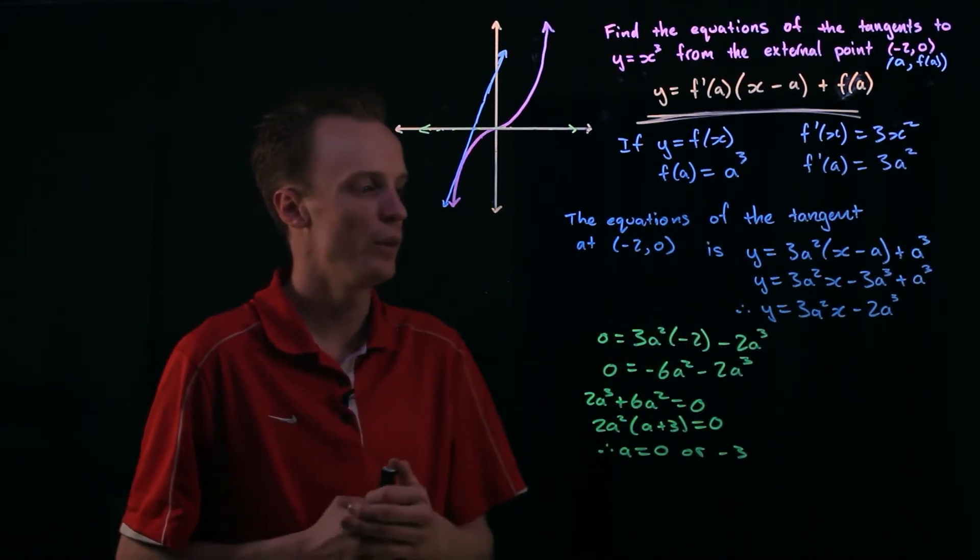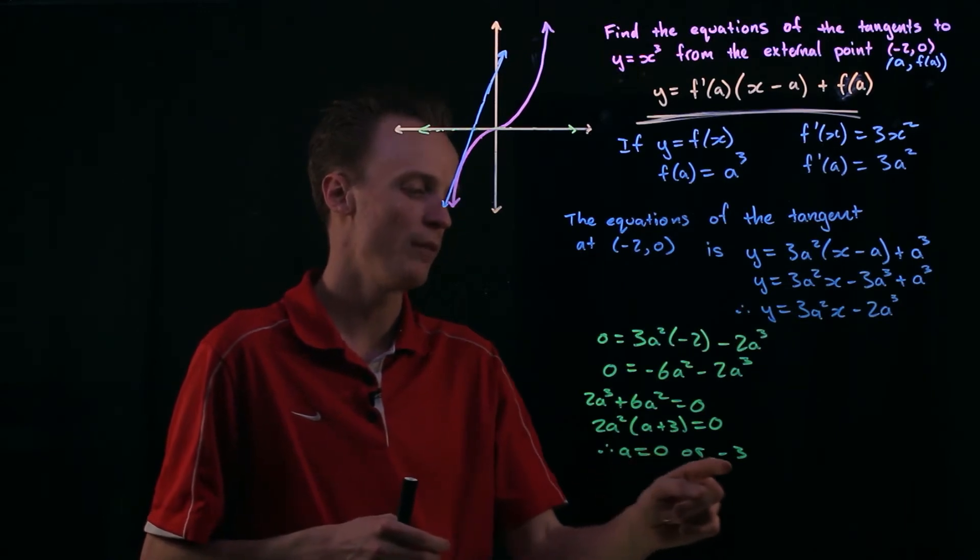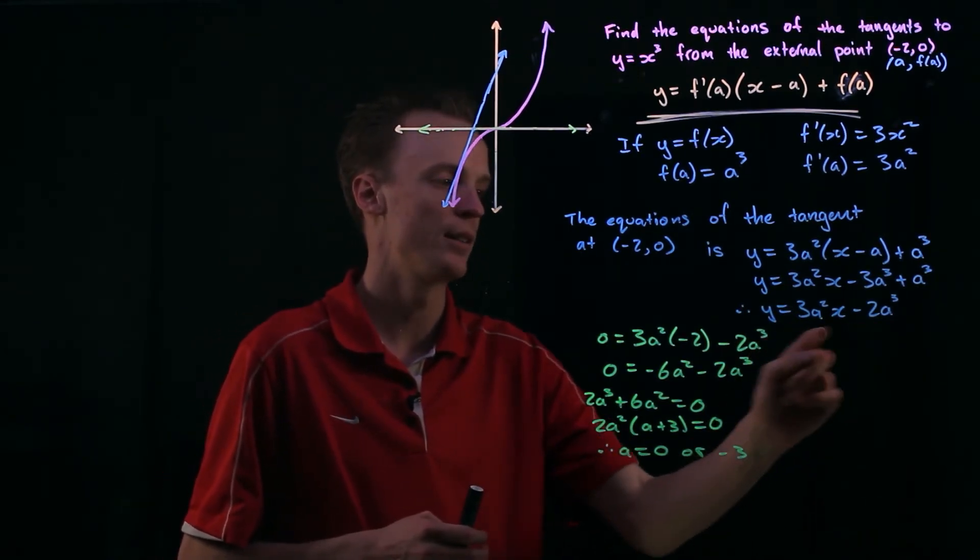So what I now need to do is to describe the equations of this graph is to substitute my values of a back into this function here.